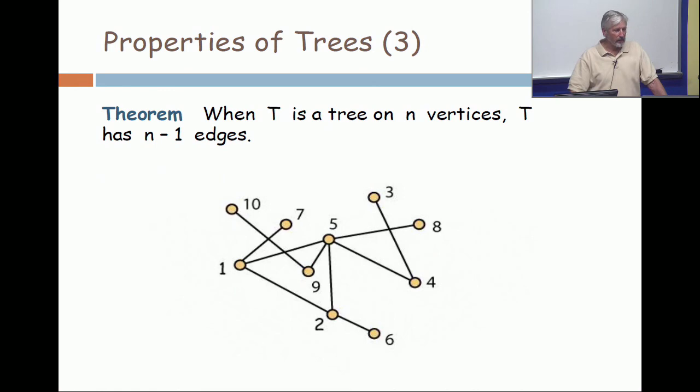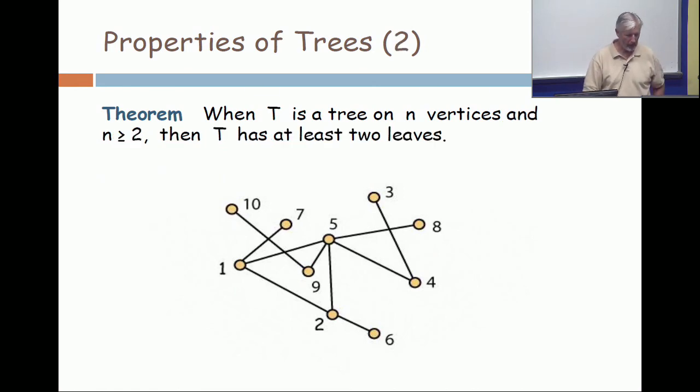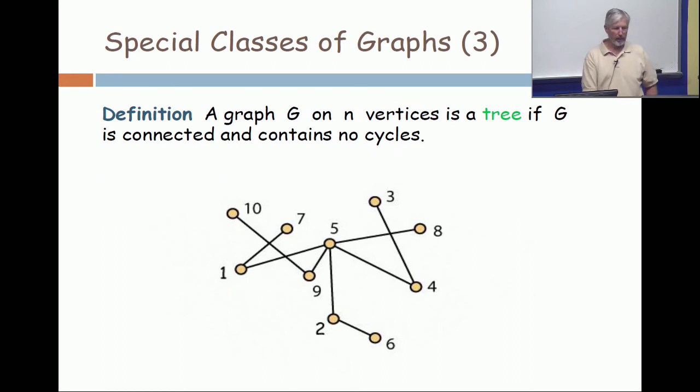When you have a tree on n vertices, it has n minus one edges. Now let's pause and do that proof by induction, but I'll at least leave up on that screen a picture.